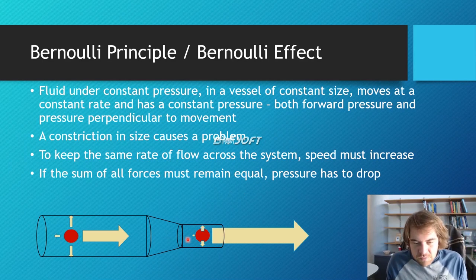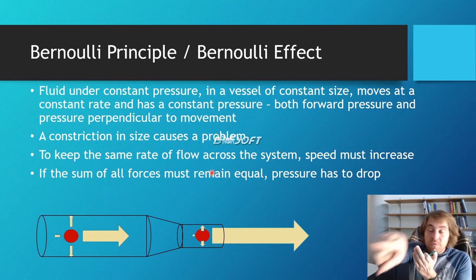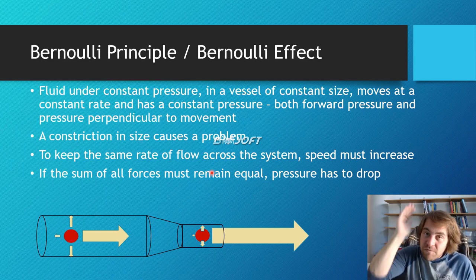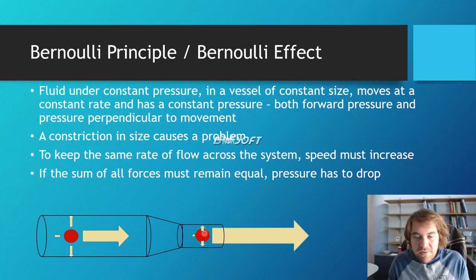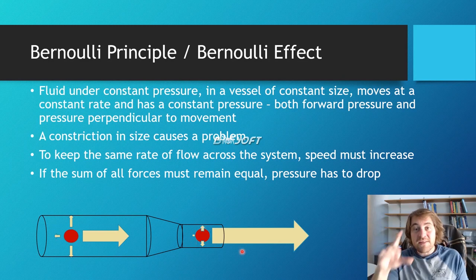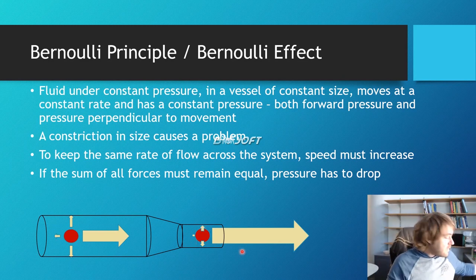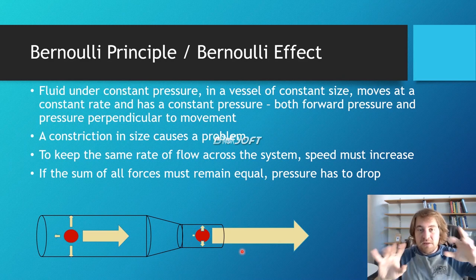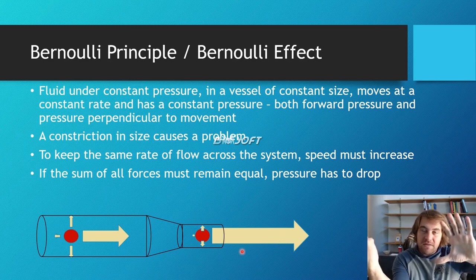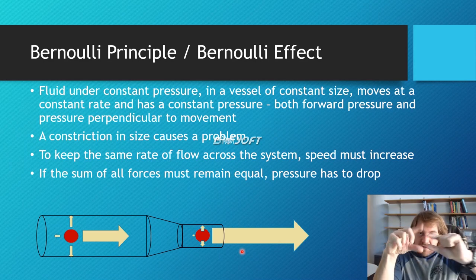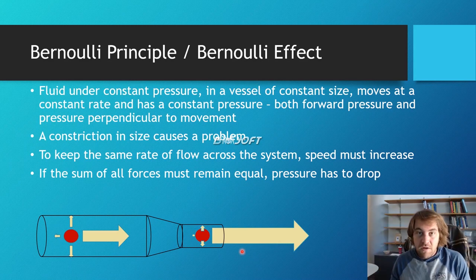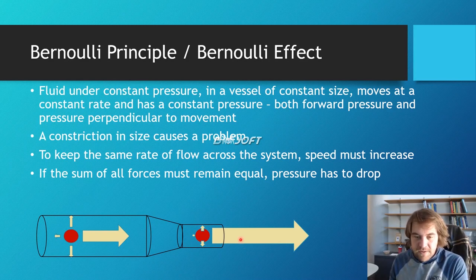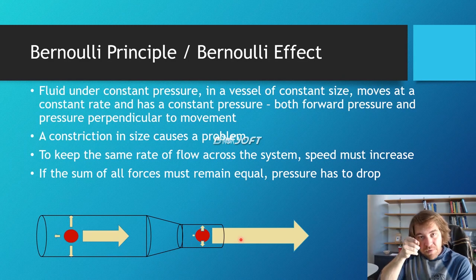Anyway, so when the tube gets smaller, the speed is going to increase, which means the forward pressure is going to increase. If the forward pressure is increasing, that means the pressure in all the other directions is decreasing because all the directions are proportional. They need to be in some sort of balance. So if this speed increases, there's going to be less speed going in all the other directions. Okay, so cool. Now we've explained how there is more of a pressure forward and less of a pressure up and down.